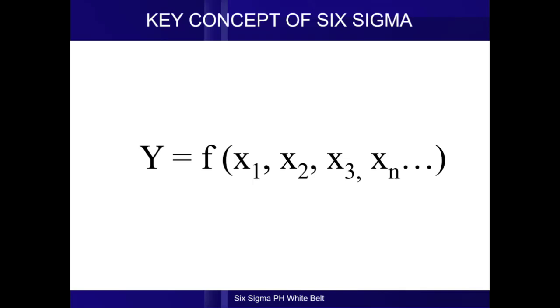You read the Six Sigma Equation like this: y is a function of x sub 1, x sub 2, x sub 3 to x sub infinity. Can you repeat that? y is a function of x sub 1, x sub 2, x sub 3 to x sub infinity.